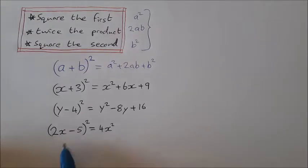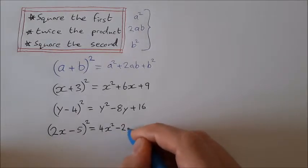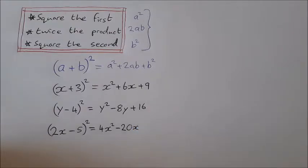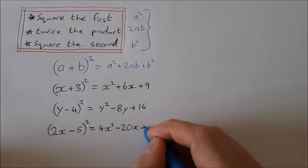Twice that is -20x. That's twice the product. Now square the second: (-5)² is +25. So (2x-5)² = 4x² - 20x + 25.